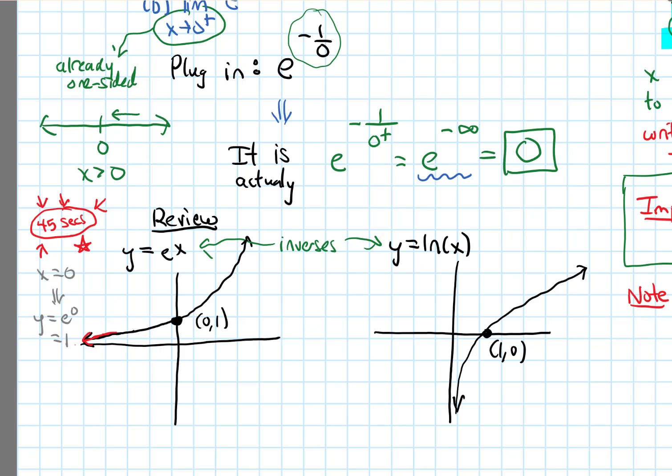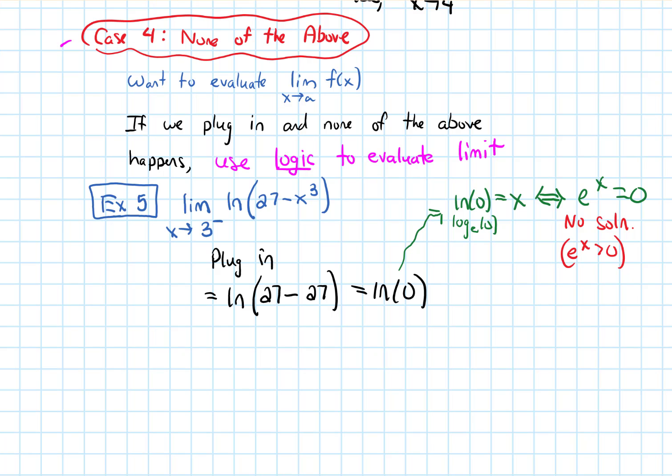In fact, graphically, we saw that earlier. When we had graphed e to the x, notice that the y values, the outputs of this, are always greater than 0. So in terms of ln of 0, this expression, we would say that this is undefined. So when an expression is something like this that does not have an equal sign, just ln of 0, when it doesn't make sense, we say undefined. For an equation, an equation is something with an equal sign, like e to the x equals 0. When there are no answers to it, we say no solution. Okay, so that was a little bit of a digression.